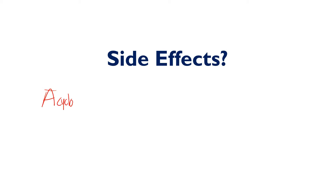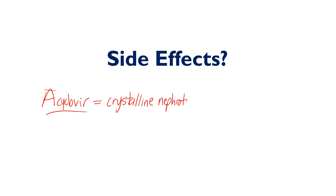Now for side effects — starting with acyclovir, the most important one to know is crystalline nephrotoxicity. This drug can form nephrotoxic crystals in the tubules, causing nephrotoxicity. Very important: acyclovir causes crystalline nephrotoxicity.